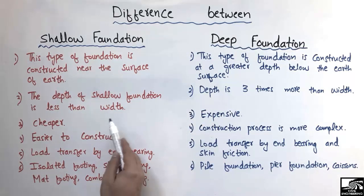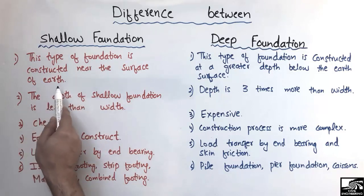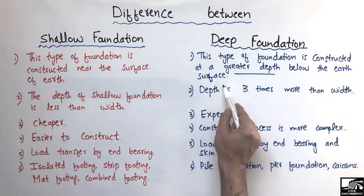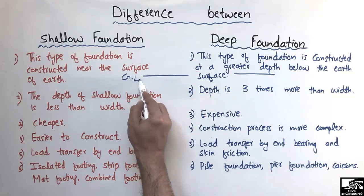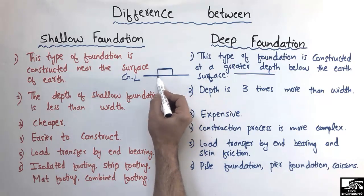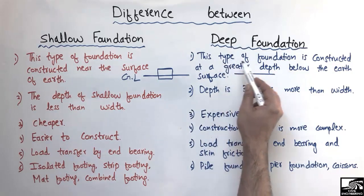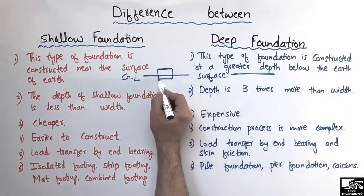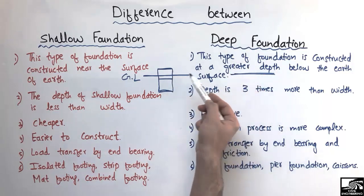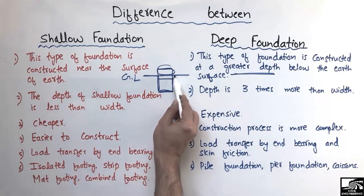There are six main differences between these two types of foundation. The shallow foundation can be defined as: this type of foundation is constructed near the surface of the earth. While the deep foundation is constructed at a greater depth below the earth's surface. The shallow foundation is generally constructed near the surface or at a certain depth below the surface, but not too much. The deep foundation is constructed at a much greater depth below the ground level.